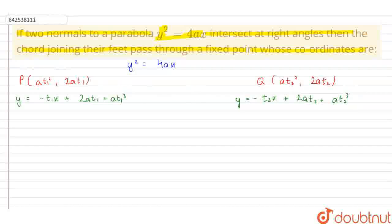Now, the slope of this normal is equal to minus t1, and slope of this normal is equal to minus t2.